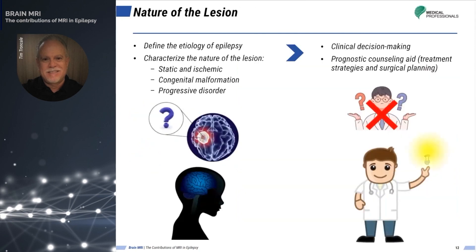An important function of MRI is to define the cause of epilepsy and characterize the nature of the lesion. MR images enable clinicians to determine whether the lesion is static or ischemic, or the product of congenital malformations, or progressive diseases such as malignant tumors or Rasmussen's encephalitis. This information is essential for clinical decision-making, prognostic consultation, and determining potential treatment strategies and surgical planning.